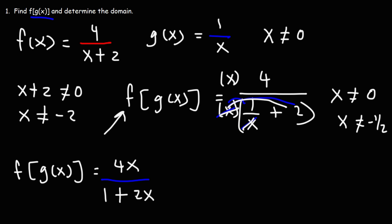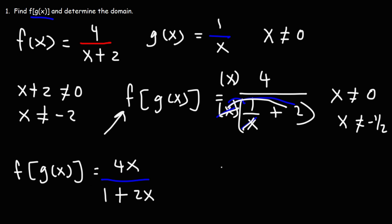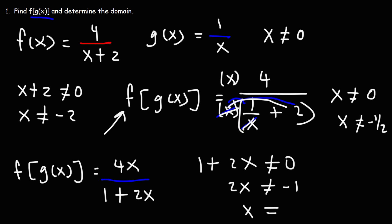Notice that we can't have a 0 in the denominator of the composite function. So 1 plus 2x cannot be 0. Subtracting 1 from both sides, 2x cannot equal negative 1. Dividing by 2, x cannot be negative 1 half.